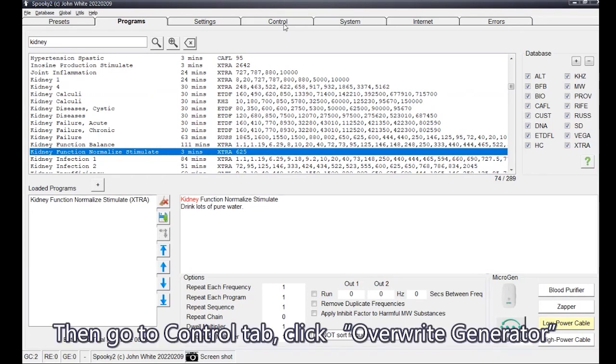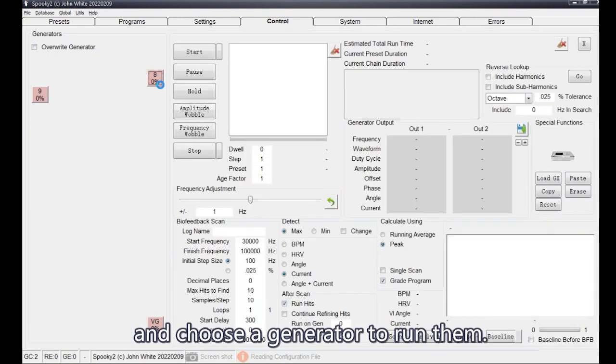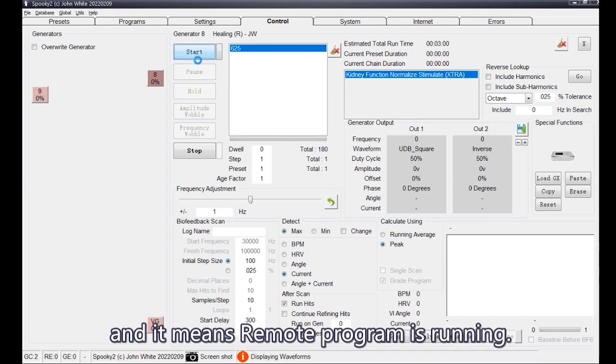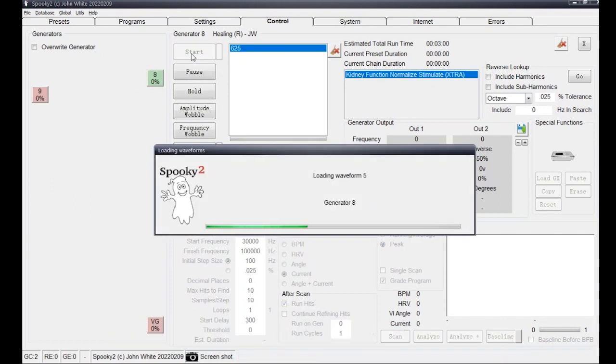Then, go to Control tab, click Overwrite Generator, and choose a generator to run them. The Generator button becomes green, and it means a remote program is running.